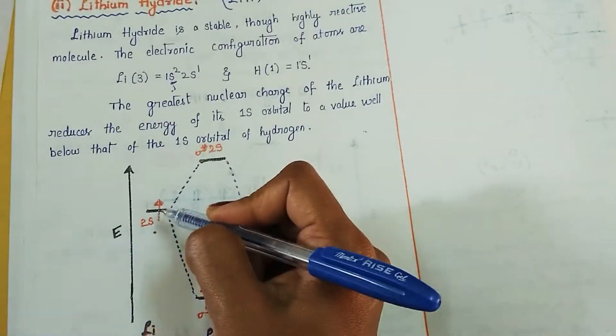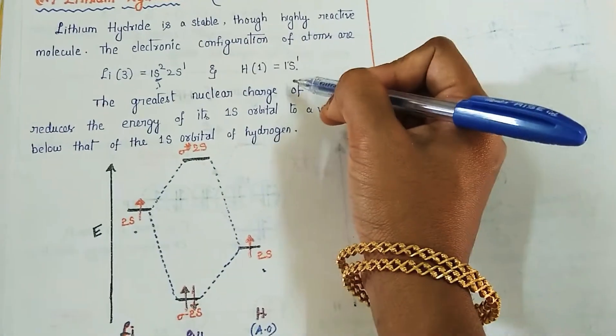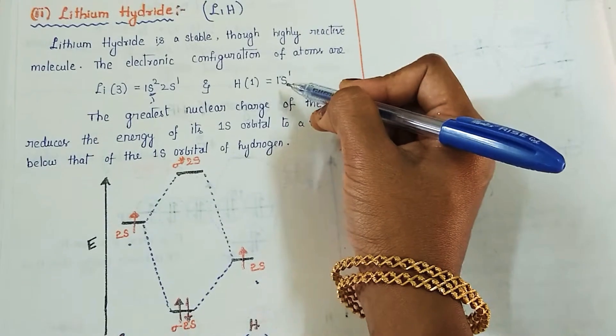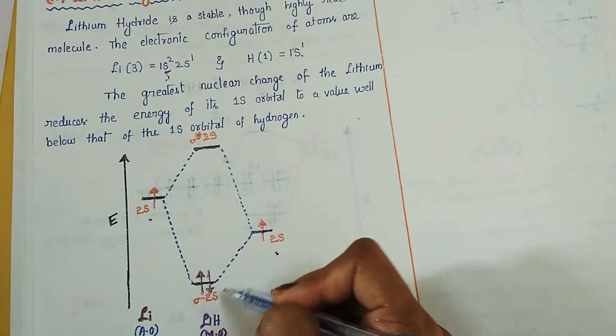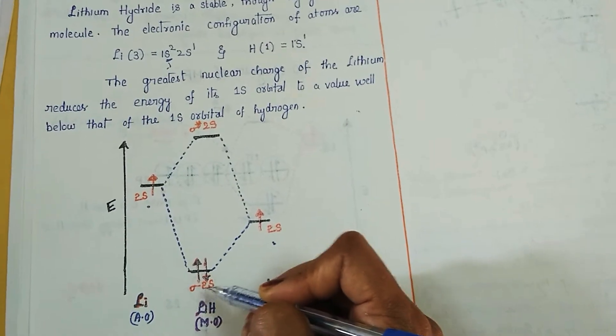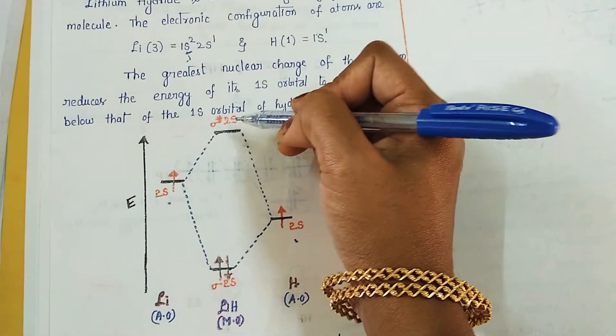So the 2s, one electron of 2s from the lithium, will combine linearly with the one electron of hydrogen which is present in 1s orbital, and it is going to form the bonding molecular orbital, that is sigma 2s. And it doesn't have any electron in antibonding orbital.